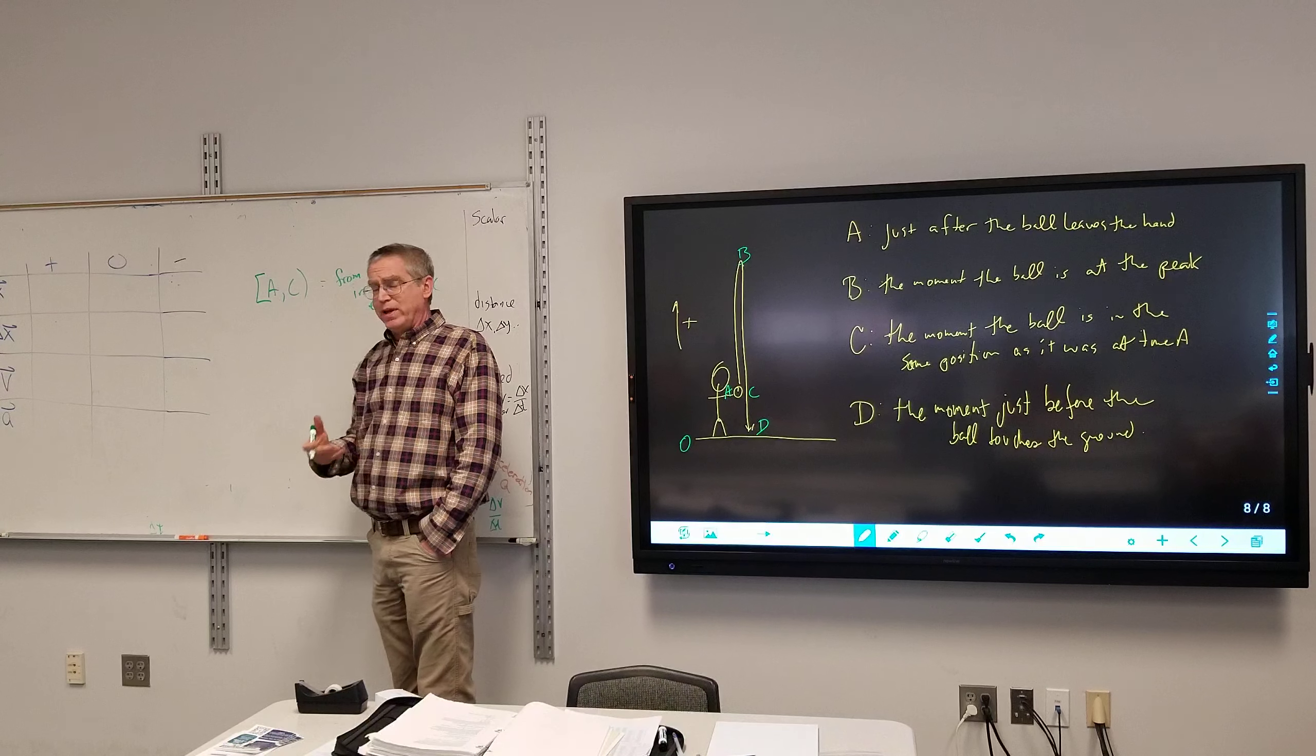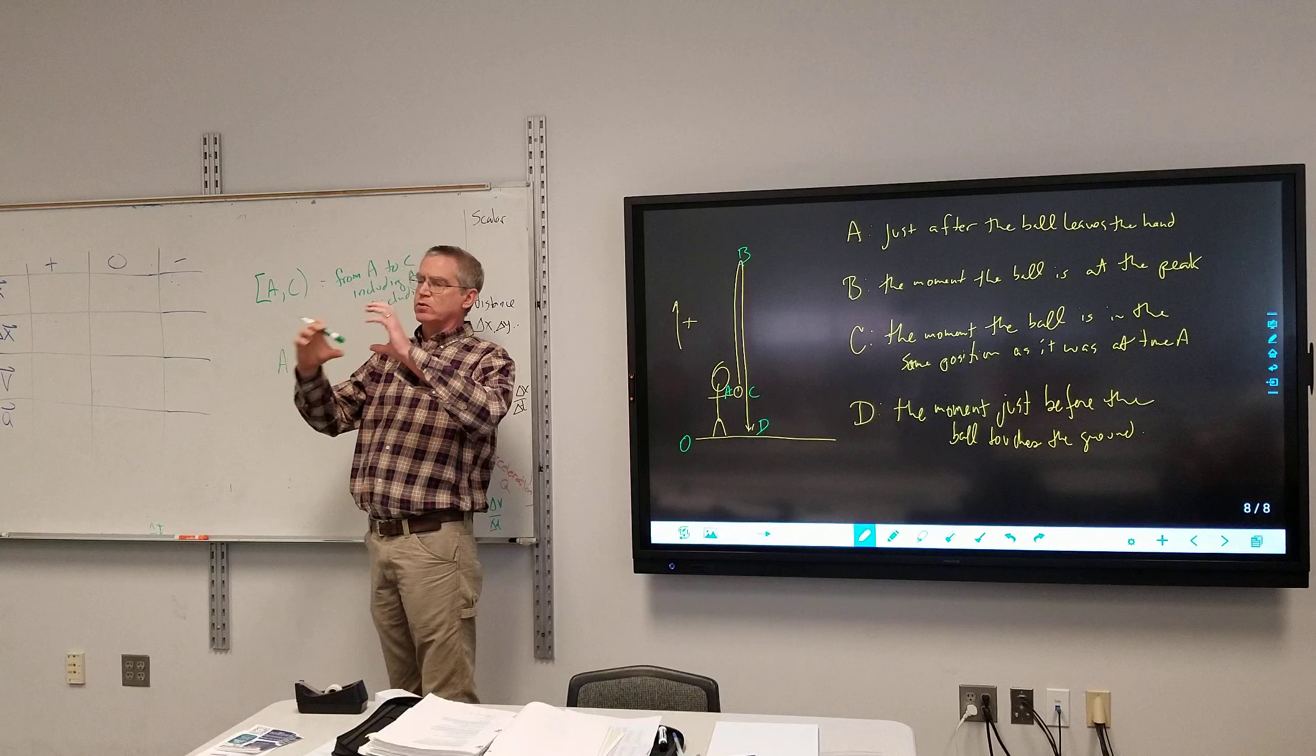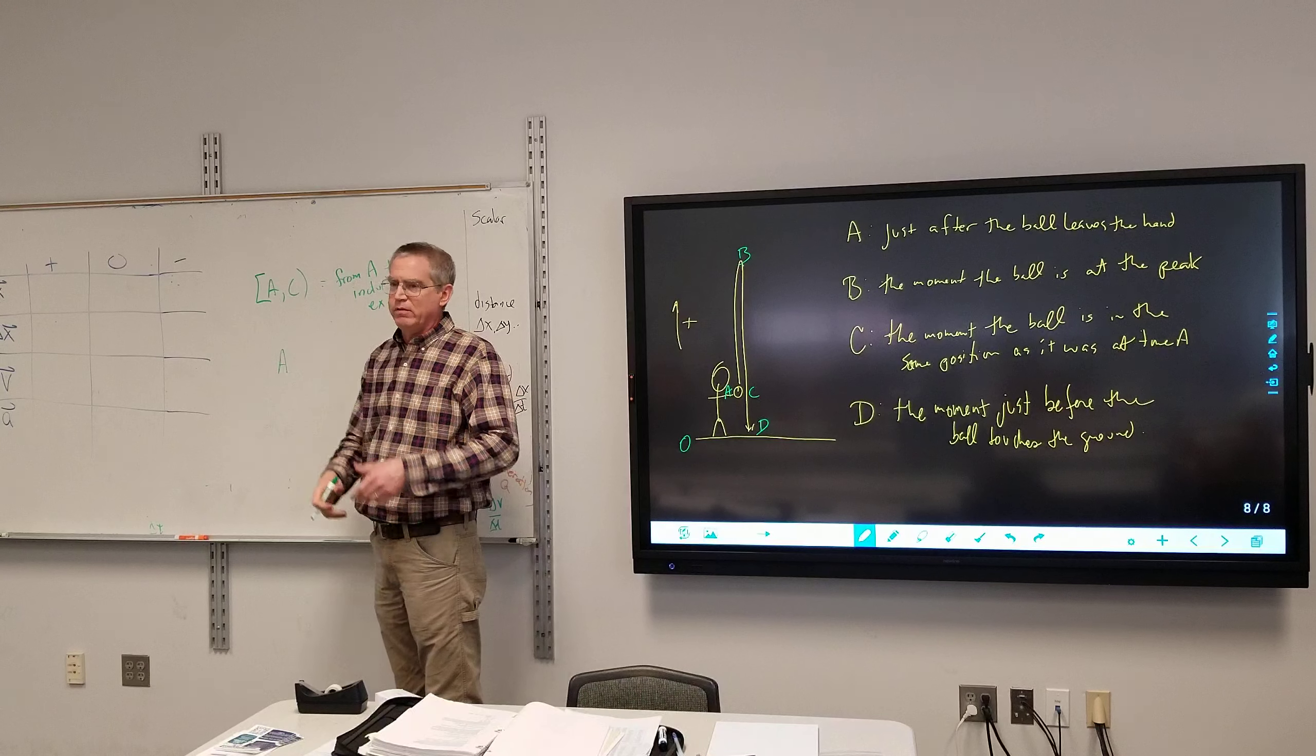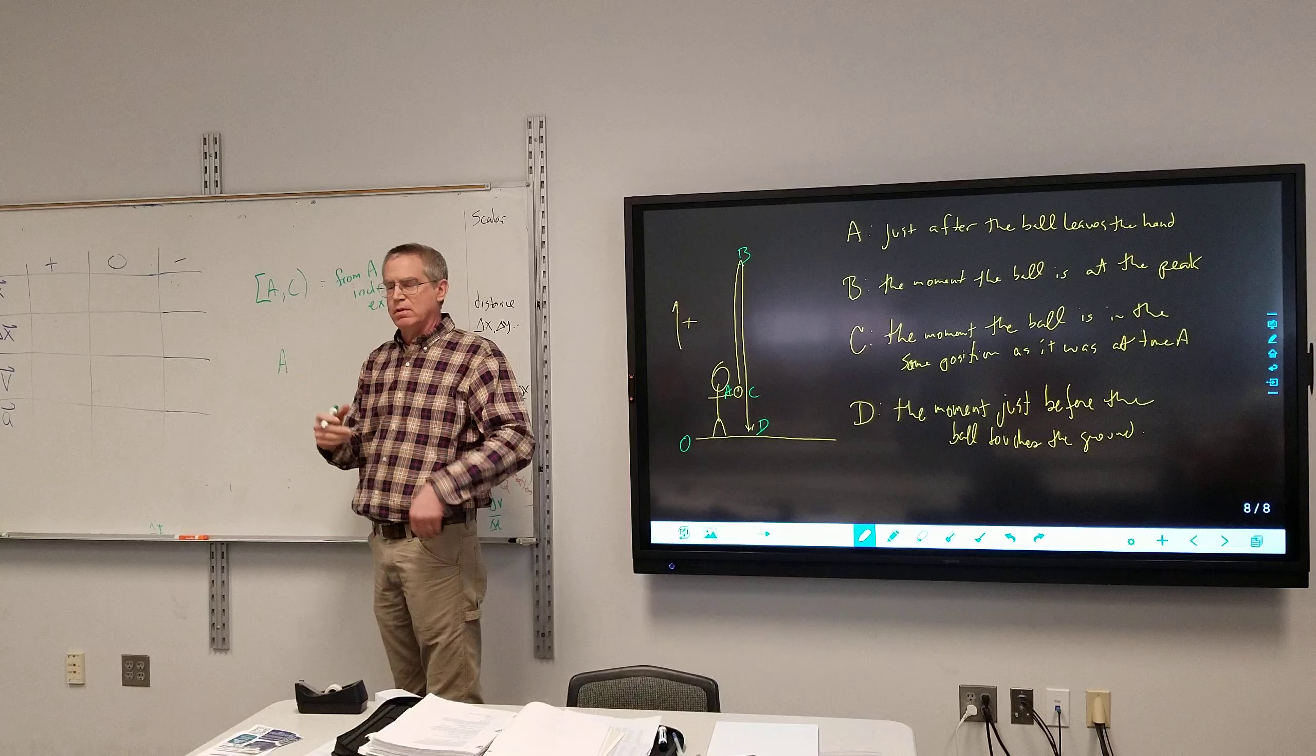If something is happening at just point A, you would just write A. Some people will put it in square brackets, and that's fine. If you put it in parentheses, that means it's from A to A, but it doesn't include A, which means it doesn't exist.